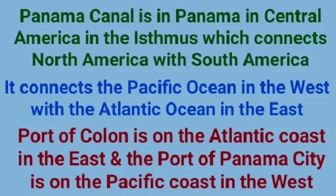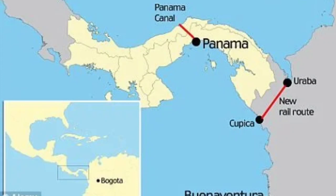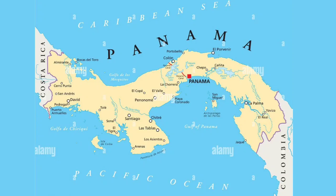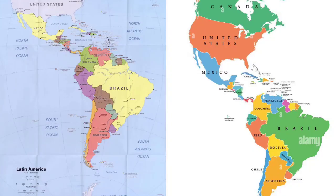The Panama Canal is another important canal connecting the two sides of the American continent. It is located in the central American region, in the isthmus connecting North and South America, in the country of Panama. The Panama Canal connects the Pacific Ocean in the west with the Caribbean Sea in the Atlantic Ocean in the east, shortening the distance between the western and eastern coasts of the American continent. The port of Colon is on the Atlantic coast, and Panama City is on the Pacific coast.